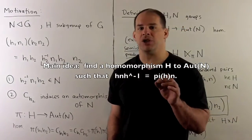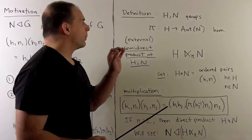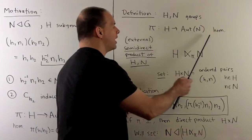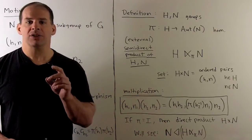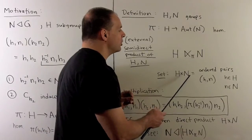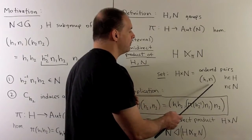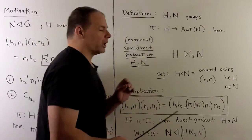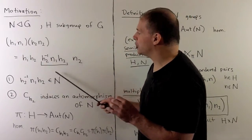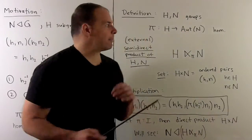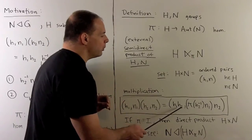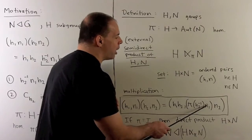This motivates our definition of the semi-direct product. We're going to have two groups, H and N, and a homomorphism pi from H to Aut(N). For the semi-direct product — this is the external version — our set is just going to be the Cartesian product of H and N: ordered pairs with elements of H and elements of N. For the multiplication, we get our guidance from conjugating by H2 inverse. Using the map pi, we apply pi to H2 inverse. So we get H1 H2, and then pi of H2 inverse applied to N1, times N2.